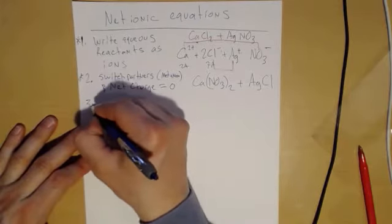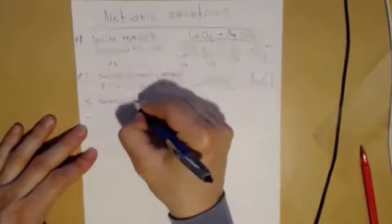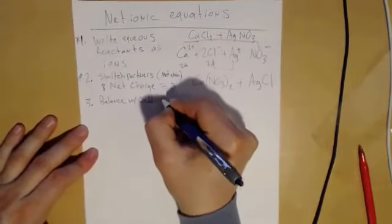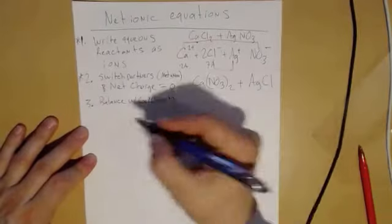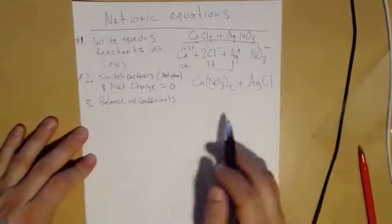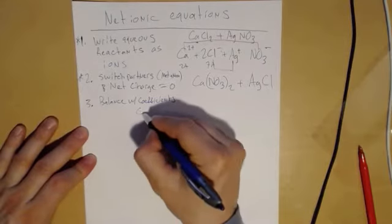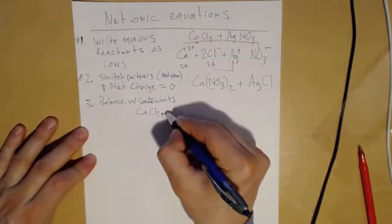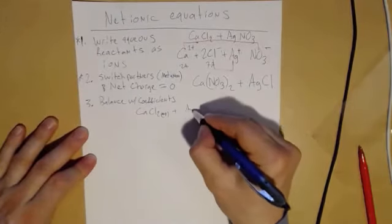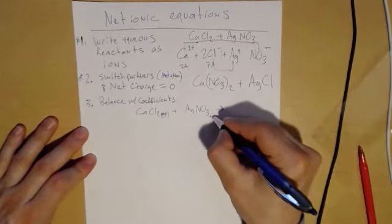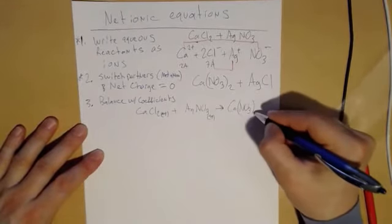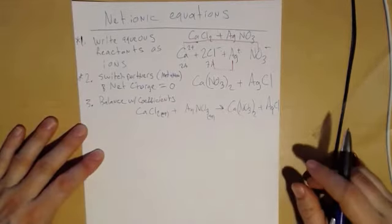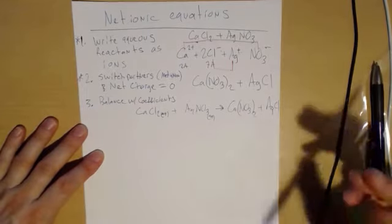Then after that, I'm going to balance with coefficients. Okay. And so what I'll do is I will write the skeletal equation. So these are the products. Those are the reactants. So now CaCl2, let's put it. These guys are aqueous plus AgNO3, also aqueous because those were reactants. They were given to us, goes to Ca(NO3)2 plus AgCl.